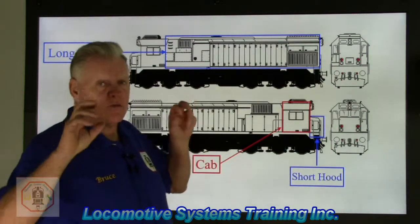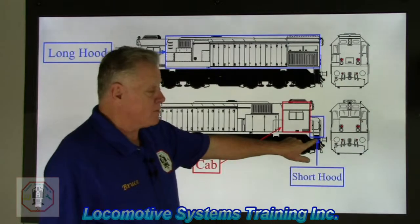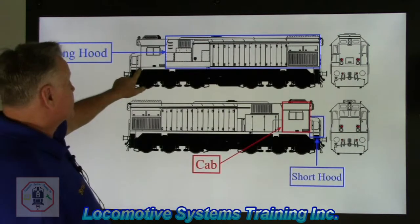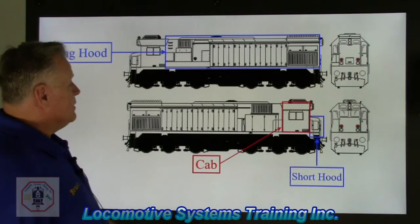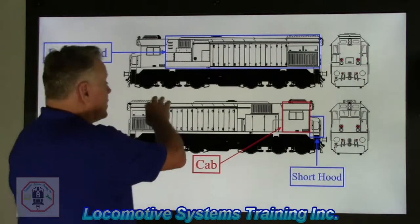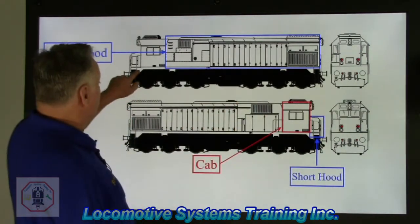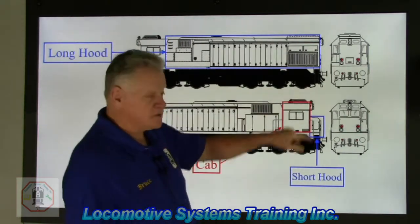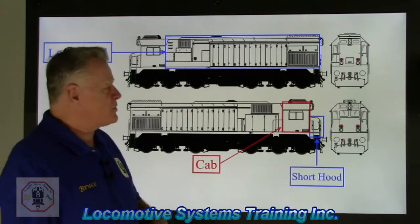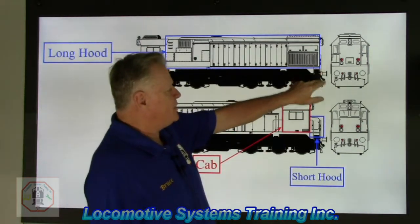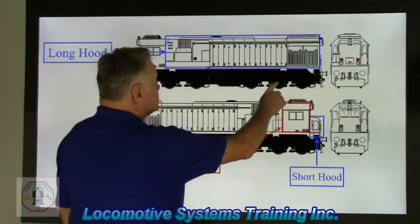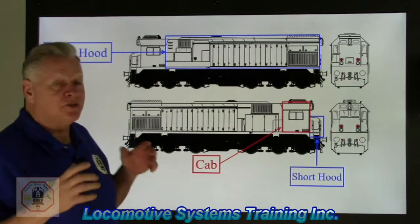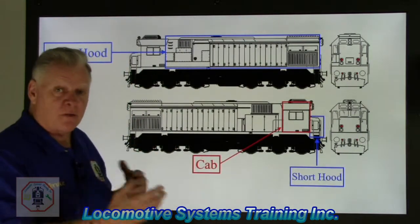Most railroads will put the letter F right there at the short hood end — that's where they affix that letter F. That also determines the numbering of components — for example, traction motors, wheels, or axles. If the letter F is at the short hood end, then axles are numbered one through six from that end. If we reversed that and ran long hood forward with the letter F at that end, the numbering would reverse accordingly. So the letter F does matter, just in numbering alone.